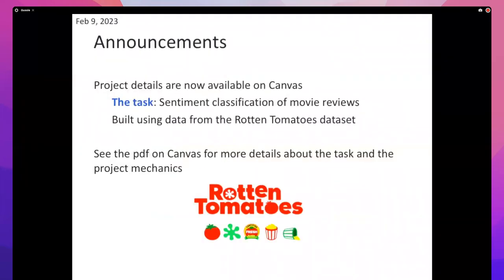I want to talk about projects. The class project details are now available on Canvas — I sent out an announcement yesterday. The task I've decided for this semester is sentiment classification of movie reviews. You're given a movie review and your classifier has to predict whether it's a positive review or not. This is a well-studied task in natural language processing. There's one popular data set from 2005 that uses movie reviews from Rotten Tomatoes — a binary classification task where one means positive and zero or minus one means negative.